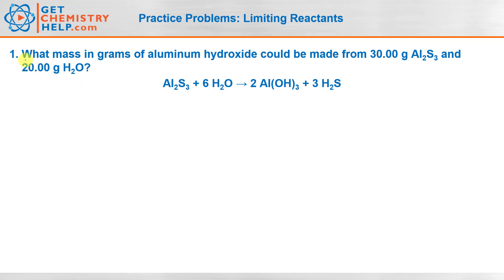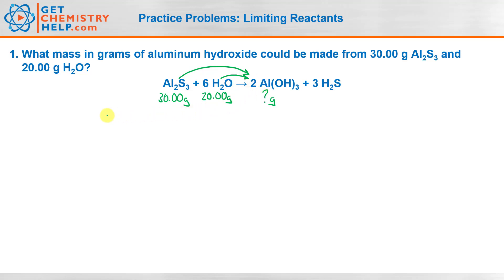So let's go ahead and read this problem. It says: what mass in grams of aluminum hydroxide could be made from 30.00 grams of aluminum sulfide and 20.00 grams of water? So our goal is to find the mass in grams of this product. We have two different reactants, so we know it's going to be a limiting reactant problem. We essentially have to do two different calculations — turn 30 grams of aluminum sulfide into grams of aluminum hydroxide, and turn 20 grams of water into grams of aluminum hydroxide.